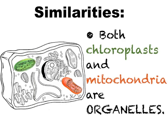Both chloroplasts and mitochondria are organelles in eukaryotic cells. Organelles are components of cells, and each organelle performs a specific function within the cell. There are many types of organelles in the eukaryotic cell, and chloroplasts and mitochondria are two of the major ones.